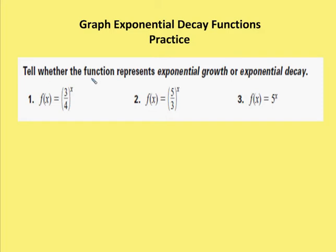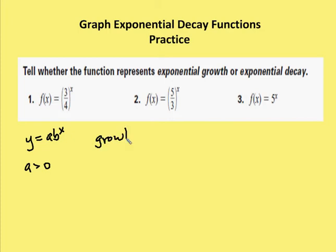First set of problems: we're going to tell whether the function represents exponential growth, exponential decay, or neither. Remember from the lesson the difference between growth and decay. We had the same model, y = a·b^x. For both growth and decay, a is going to be greater than zero. For growth, the b value is greater than one, and for decay the b value is between zero and one.